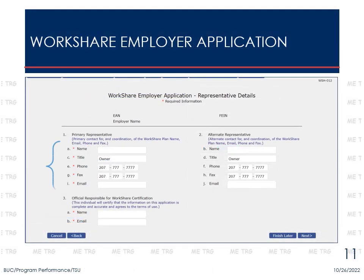On the Representative Details screen, provide contact information for the primary employer representative for coordination of your WorkShare plan, as well as for the official who is ultimately responsible for certifying the information on the application is accurate and for accepting the terms of use. If an alternate representative can be named, enter their contact information as well. Select Next to continue.